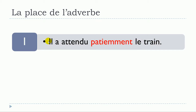So: il a attendu — and normally the rule is that the adverb, l'adverbe, should come after the verb. So you put it right here: patiemment, meaning 'patiently', and then le train. He waited patiently for the train. That's the first option.